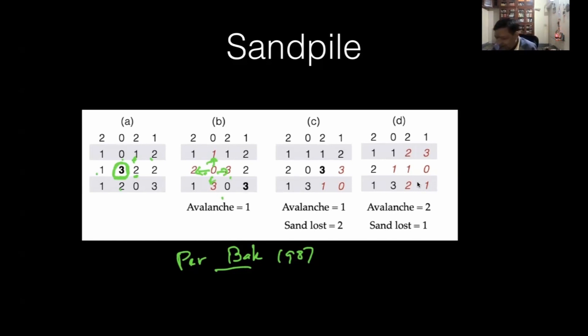Now you have to check whether any of the sites already has three. If this was three, and this sand comes, it becomes four and that will start a further avalanche. This whole process is called avalanche.